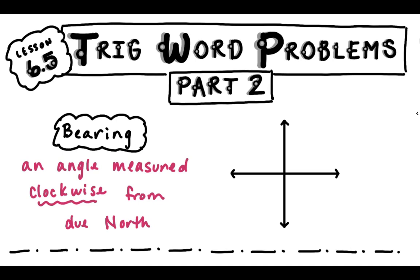Bearings are sometimes used in navigation, like boat navigation or planes, plane trajectories. They might use a bearing so that they're all orienting their angles the same and their trajectories the same way.